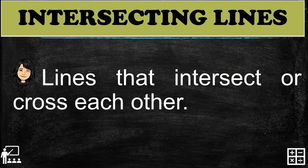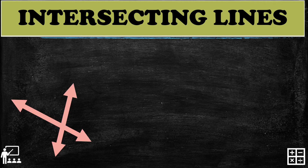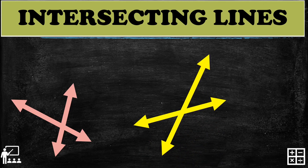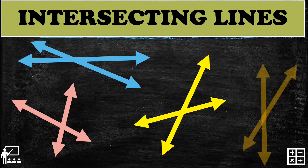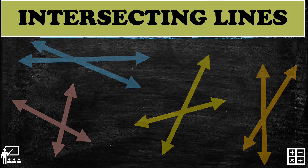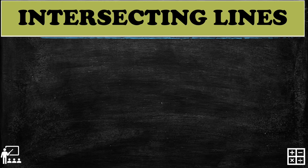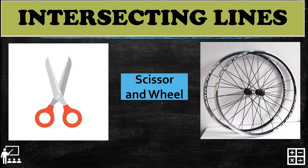Next are intersecting lines. Intersecting lines are lines that intersect or cross each other — lines that meet at a given point. In real life, you will observe intersecting lines in scissors and a wheel.